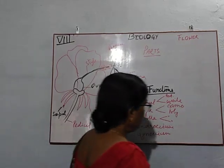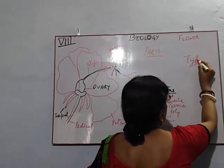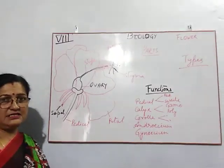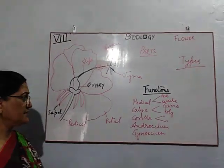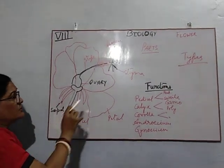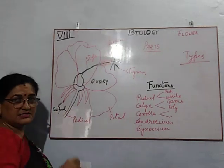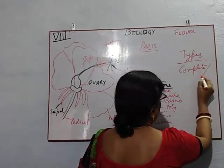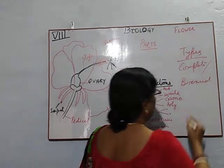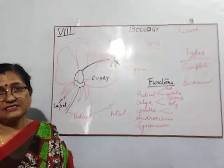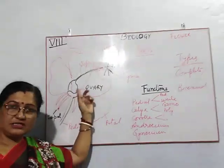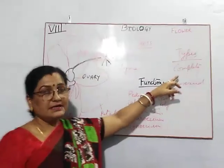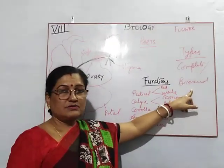Today I will come to the types of flowers. Types means varieties. There are so many types of varieties you can see in the garden or elsewhere. But according to structure, those who have all the four whorls are called a complete flower, also known as a bisexual flower. If it is complete, it means all four whorls are present, including the male and female whorls, so they are also known as bisexual flowers.